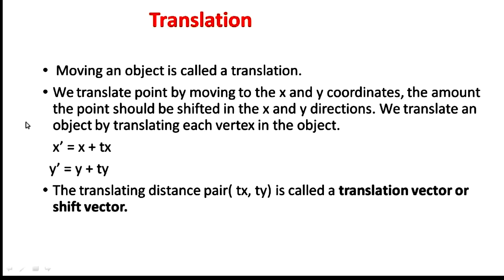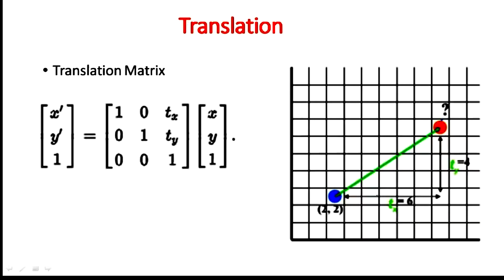x dash is equal to x plus tx — so how much it is moved is given by the tx value. In the y direction, y dash is equal to y plus ty — it is moved in the y direction by ty distance. This tx and ty is called the translation vector or shift vector. The translation matrix has x dash, y dash as the new coordinate, and the matrix is [1 0 tx / 0 1 ty / 0 0 1], multiplied with the original coordinates x, y to get the new coordinates.